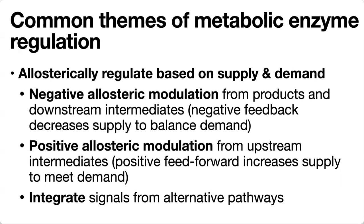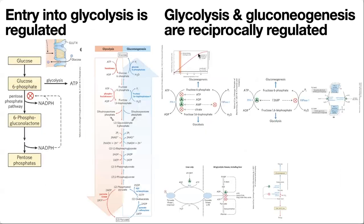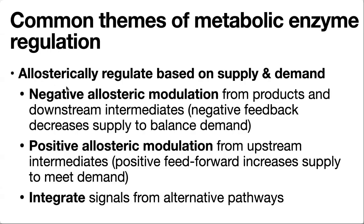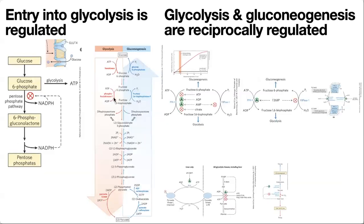Instead of just stopping things, you could have the product of one reaction stimulate the activation of the opposite reaction or one that takes things in a different direction. For positive modulation, upstream intermediates can provide feedforward signals — your reactants signaling the enzyme that there's a lot of stuff upstream, keep going forward. We'll see examples where things farther up in the pathway feed forward to say, get ready, there's a lot of stuff coming down the line.